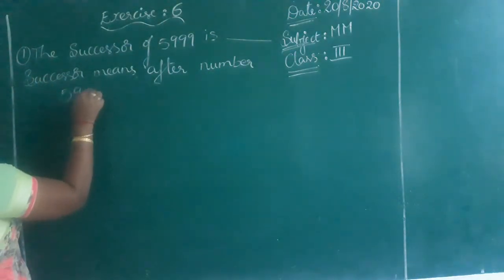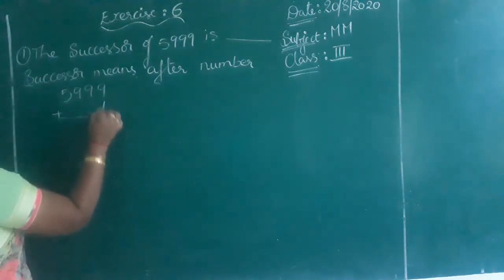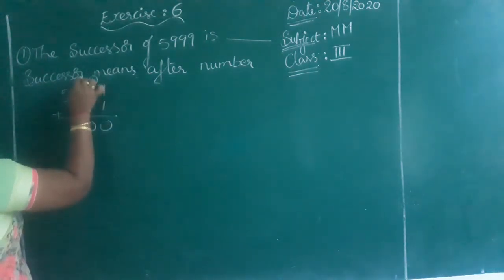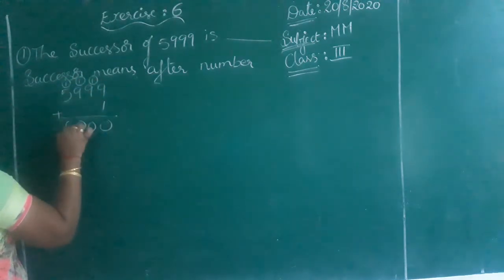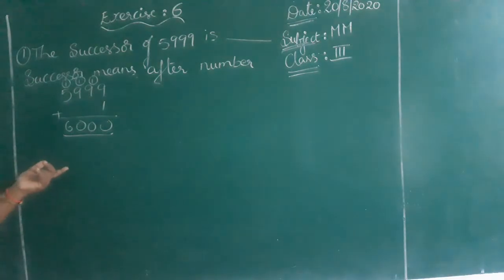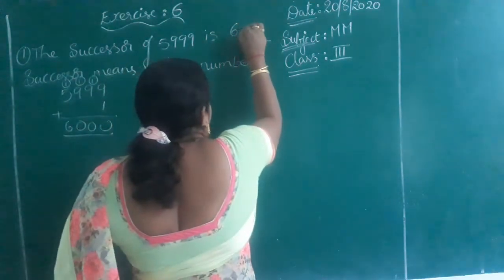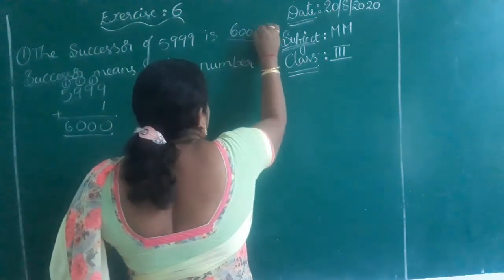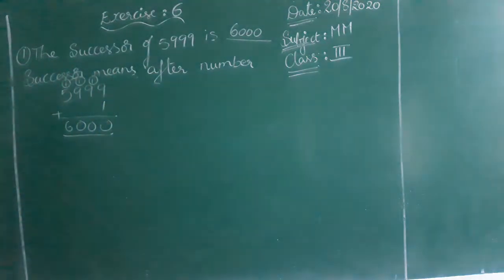So 5999 plus 1. What is the successor of 5999? 6,000. What is the successor of 5999? 6,000.